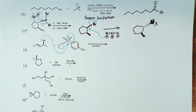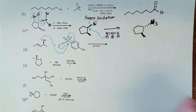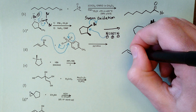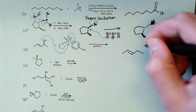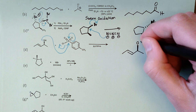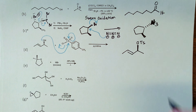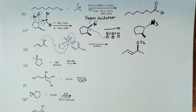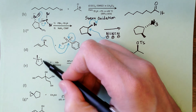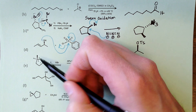Part d: para-toluenesulfonyl chloride. Oxygen acts as a nucleophile, displaces chloride, and you get the sulfonate ester — a way to convert alcohols into fantastic leaving groups.